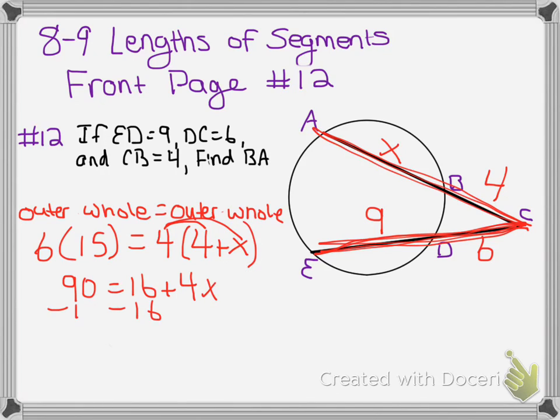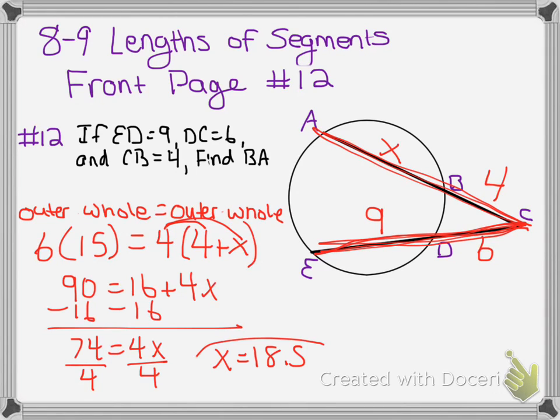Subtract 16 from both sides, gives me 74 equals 4X. Divide both sides by 4, X equals 18.5. And that's your answer.